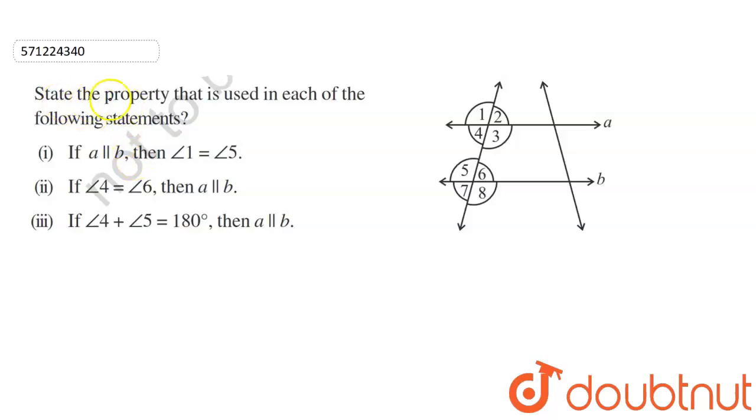Here we have to state the property used in each of the following statements. The given statements are: (i) If a is parallel to b, then angle 1 equals angle 5. (ii) If angle 4 equals angle 6, then a is parallel to b. (iii) If angle 4 plus angle 5 equals 180 degrees, then a is parallel to b.